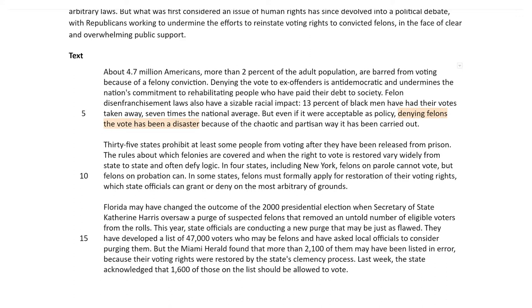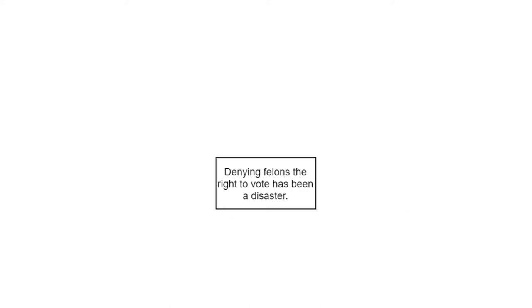Looking a bit further back: 'denying the vote to ex-offenders is anti-democratic and undermines the nation's commitment to rehabilitating people who have paid their debt to society' — that sounds like it should be our primary claim. But if we read the rest of the paragraphs, it's not just focused on how anti-democratic it is and doesn't address rehabilitating people. Those could have been good arguments to make, but they don't make them. Instead, they really just generally argue how denying felons the vote has been a disaster. So on your argument map, drag in a new box and type: 'Denying felons the right to vote has been a disaster.'